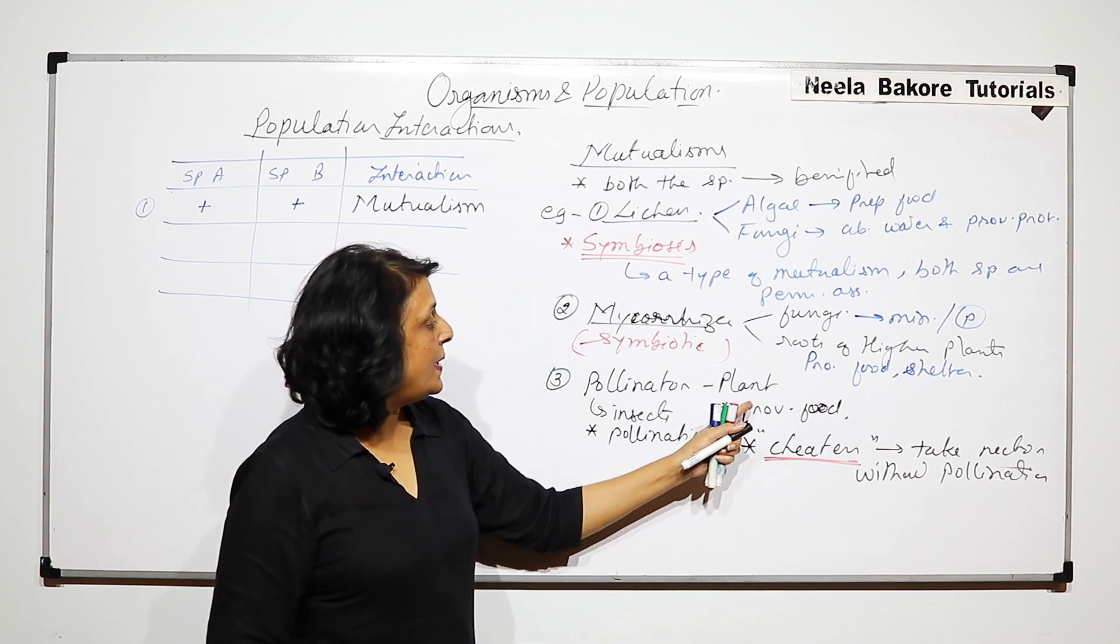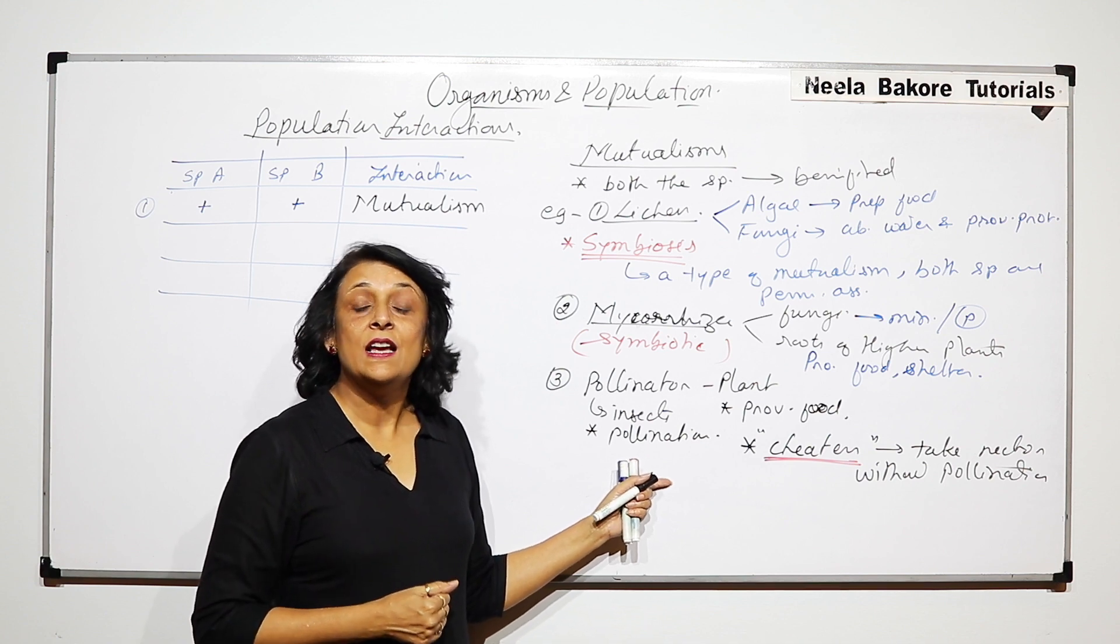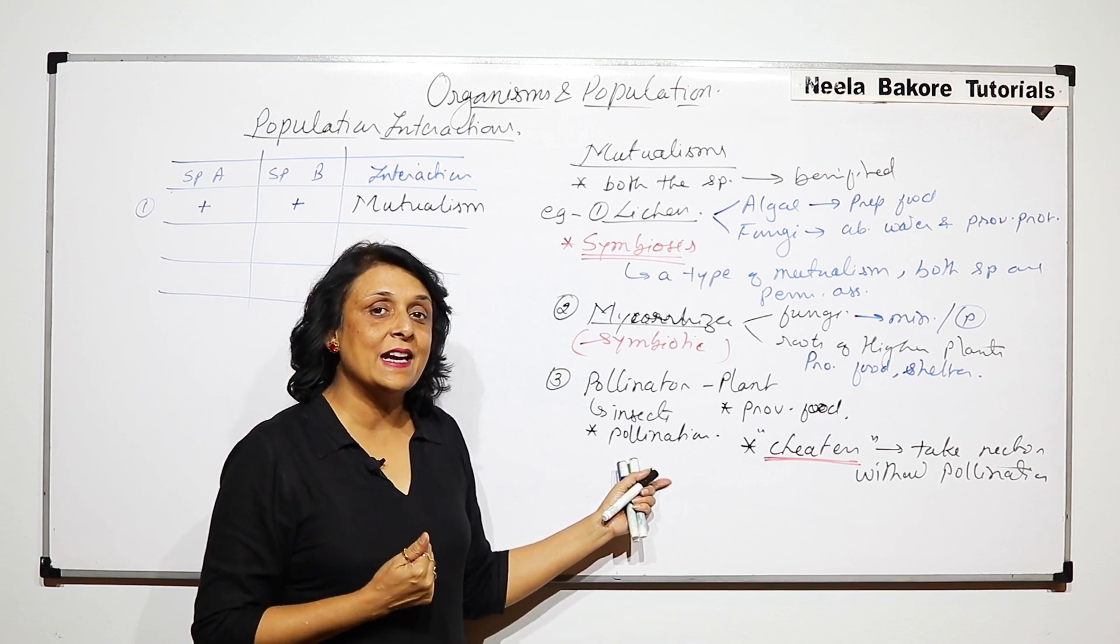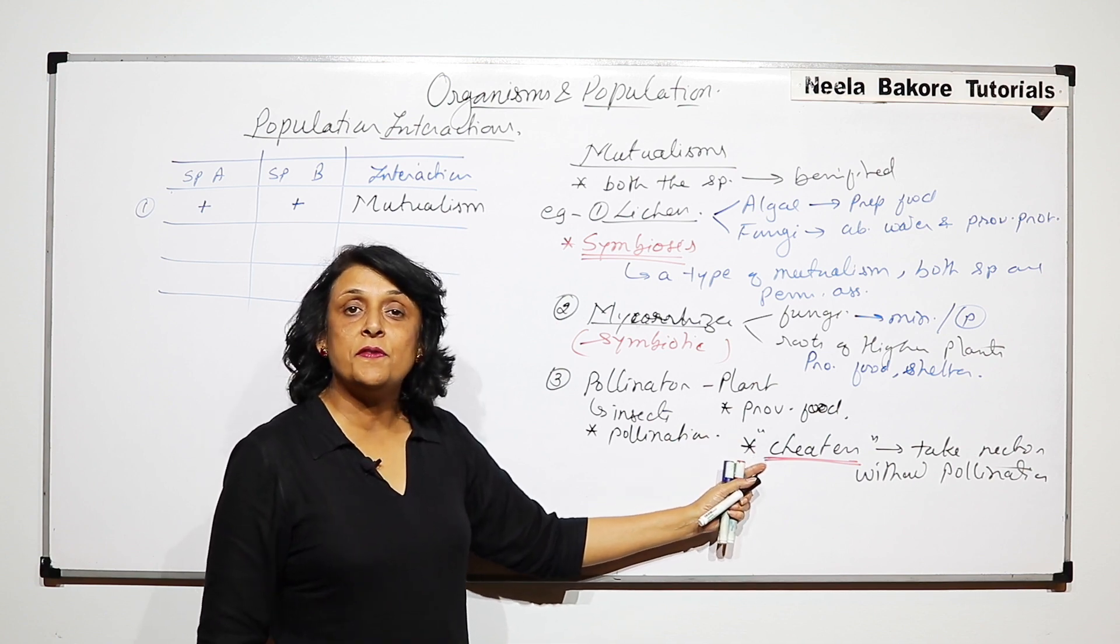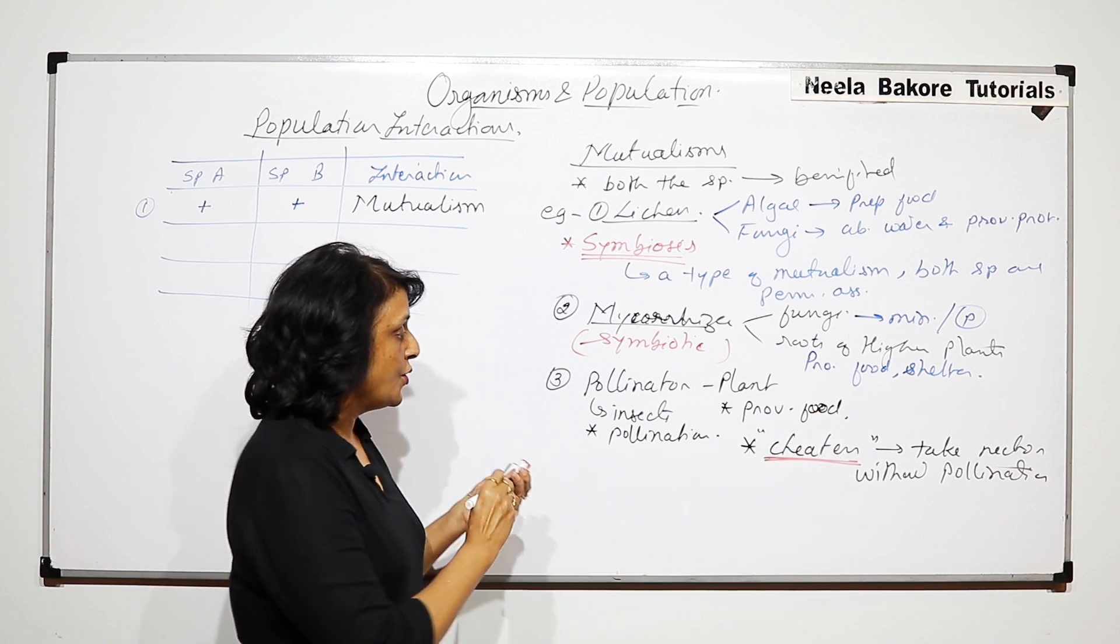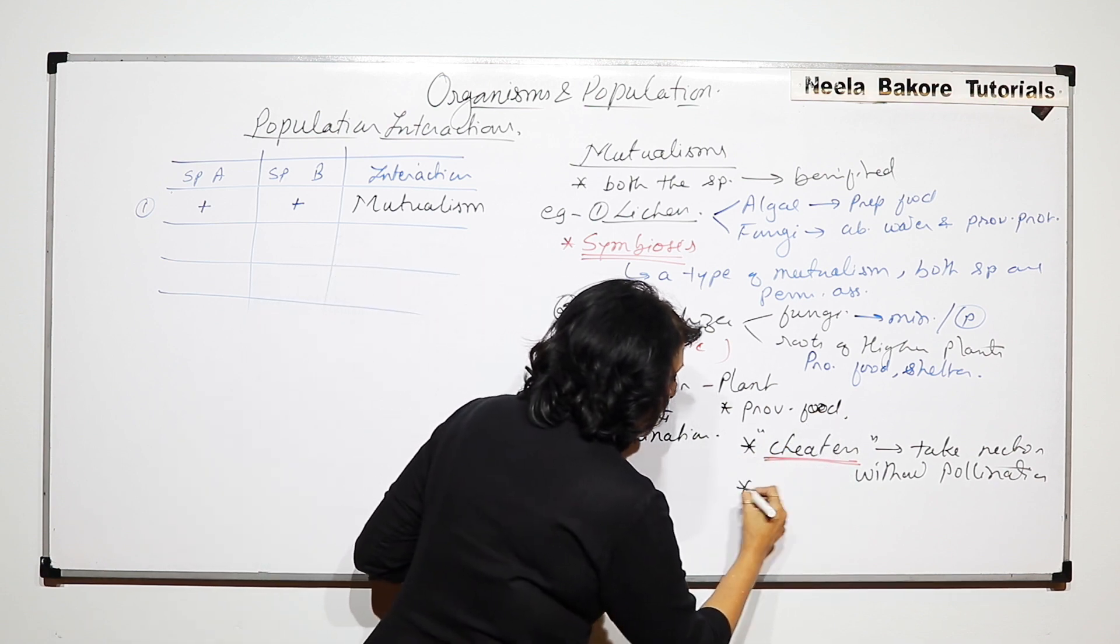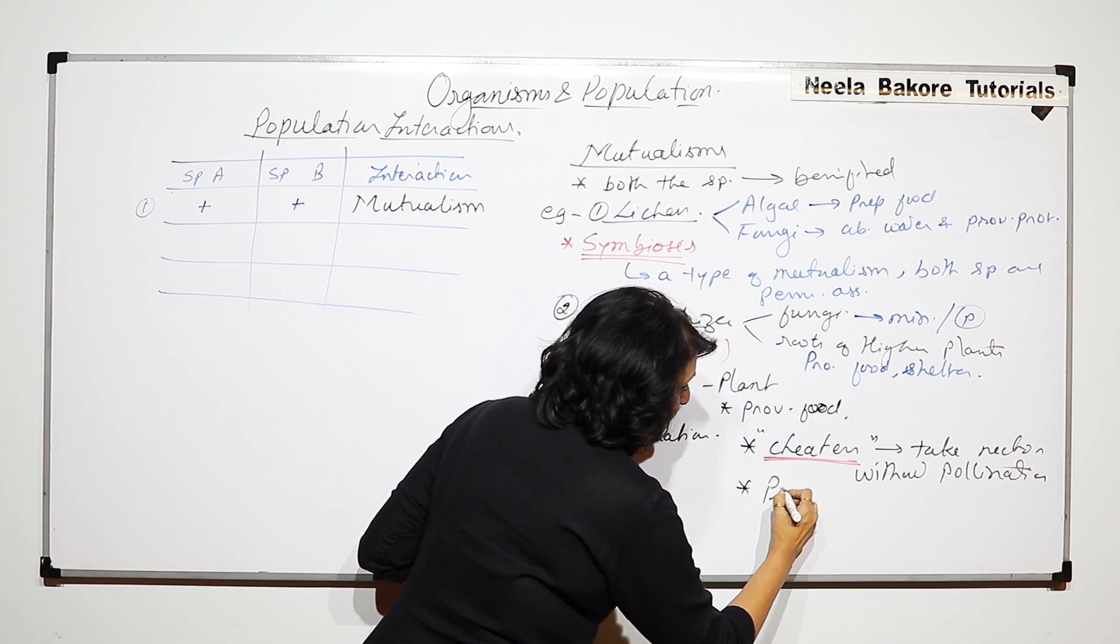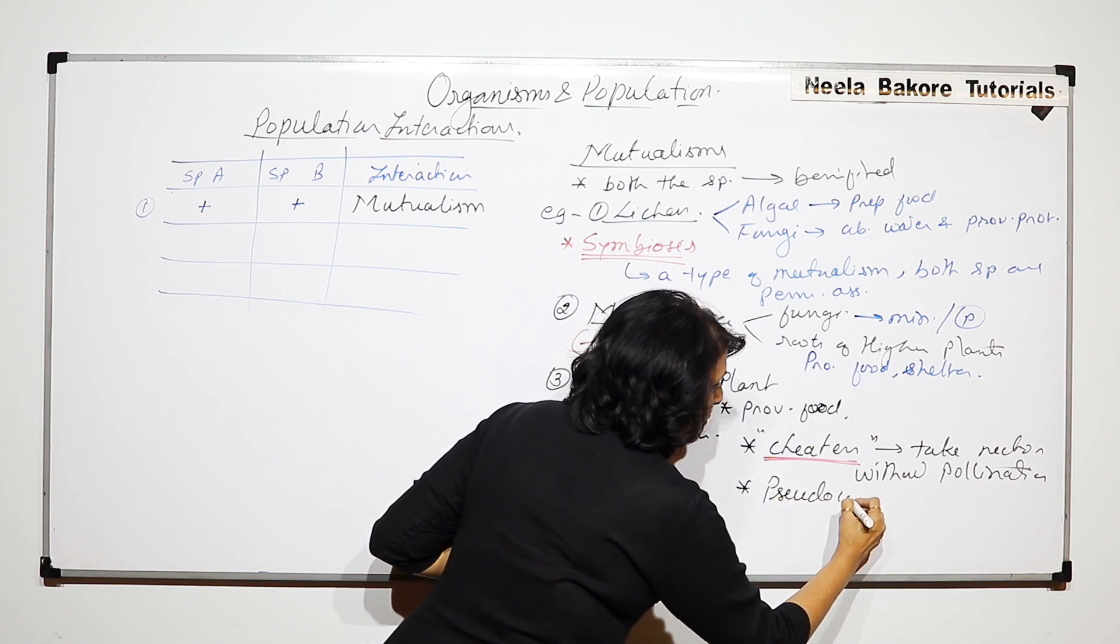Sometimes, the plant gets benefited but the insect does not get benefited. Here, the insect got benefited and the plant did not get benefited. So let us talk about one more example and that is written as pseudocopulation.